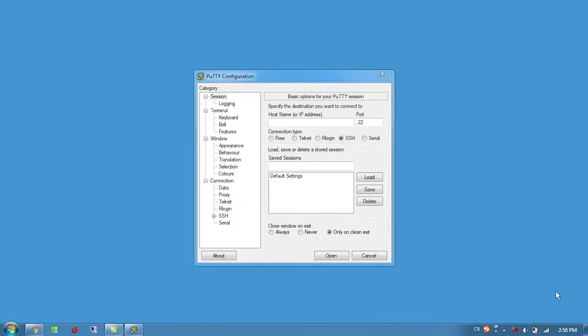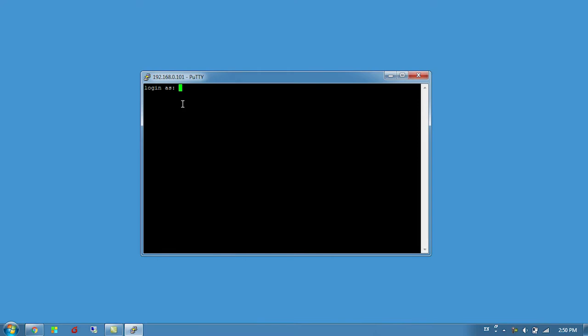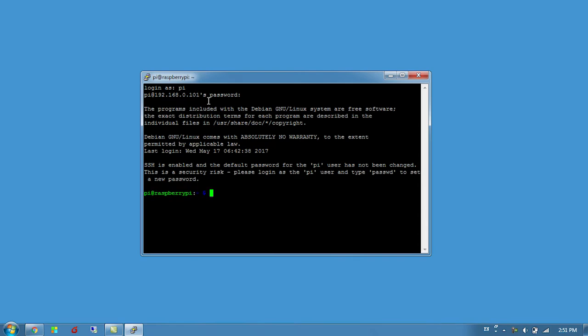Then on your PC, open PuTTY to try to remote access the Raspberry Pi. In the session, type in the IP address you just noted down, 192.168.1.101, and click open. It worked. Login as: type in pi as the Raspberry Pi's username. And the default password, if you didn't change it, is raspberry.